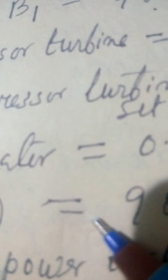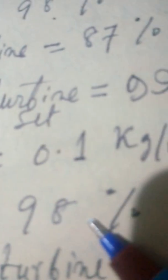Combustion efficiency of reheater B2 is equal to 98%.